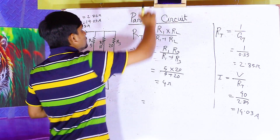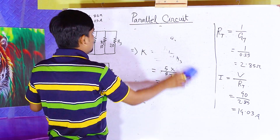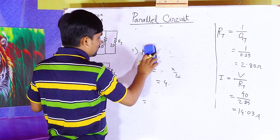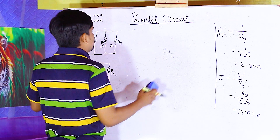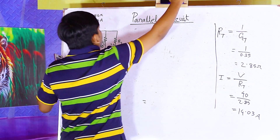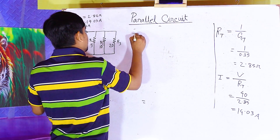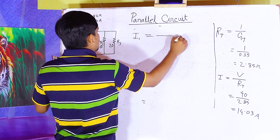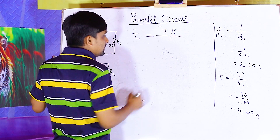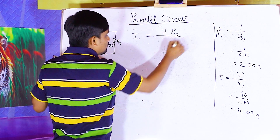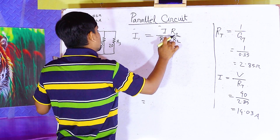Using the current divider rules, I2 equals total current I multiplied by R2 divided by R1 plus R2.